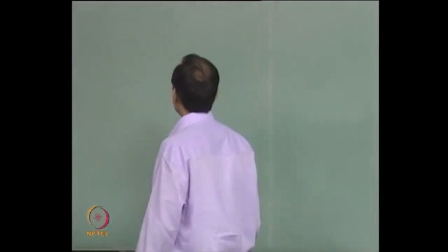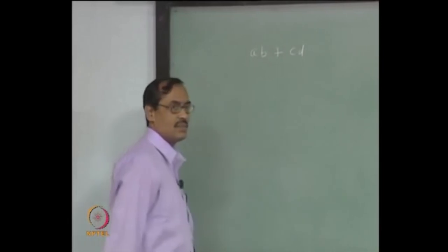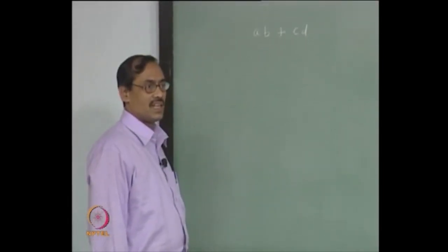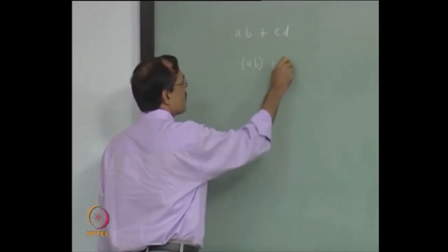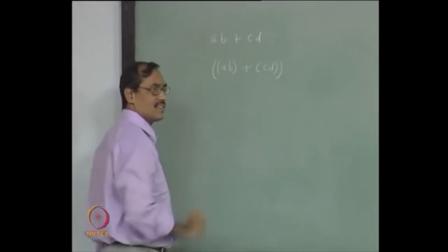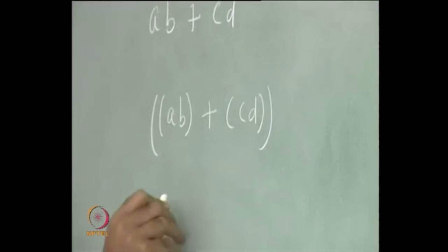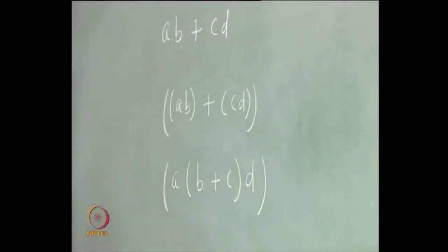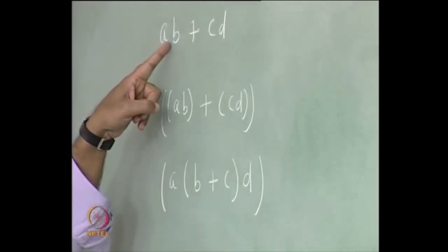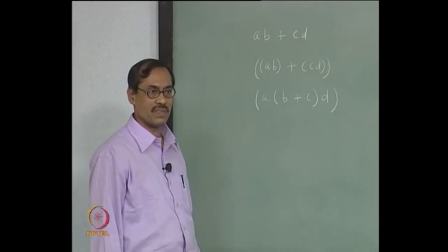Suppose you write AB plus CD in usual mathematics, then you would think it as this. If you put the parentheses, it would look like this, but certainly not like this. It is because multiplication has higher precedence than addition. This is what we mean by higher and lower precedence.